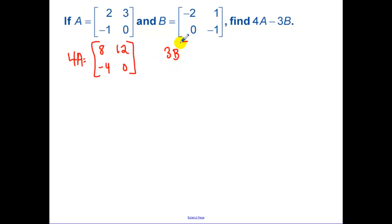3B, I'm going to multiply by a positive 3, so I don't forget to multiply by a negative. I have a negative 6, 0, 3, and negative 3.